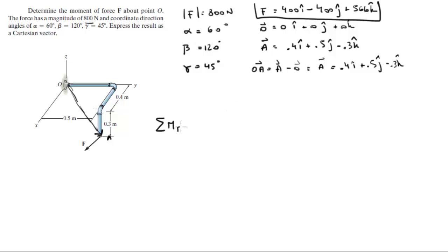The moment that the force creates about A is given by the cross product of OA cross F. To do that, you draw your matrix. OA is 0.4, 0.5, negative 0.3, and F is 400, negative 400, and 566. You redraw your first and second column: 0.4, 0.5, 400, minus 400. You do your positive diagonals.